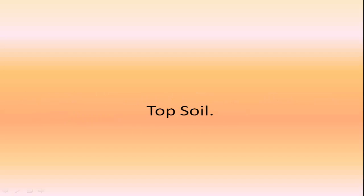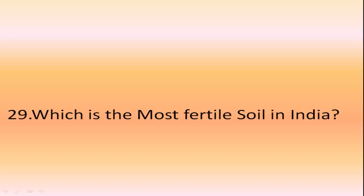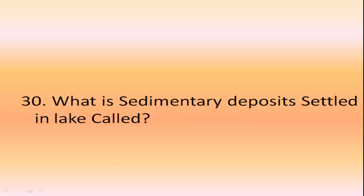Which soil is found in areas of heavy rainfall and high humidity? Peat soil. Which layer of soil contains humus that makes the soil fertile? Top soil. What is the color of arid soil? Arid soil ranges from red to brown in color. Which is the most fertile soil in India? Alluvial soil. What are sedimentary deposits settled in a lake called? Lacustrine. Thank you, please subscribe to my channel for more GK questions and answers.